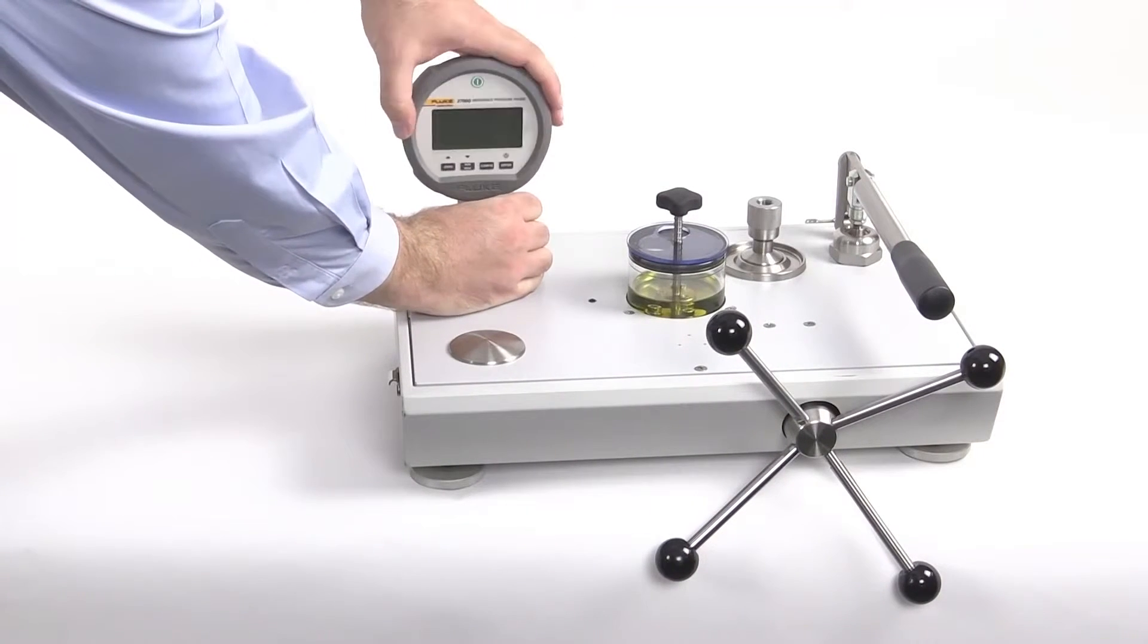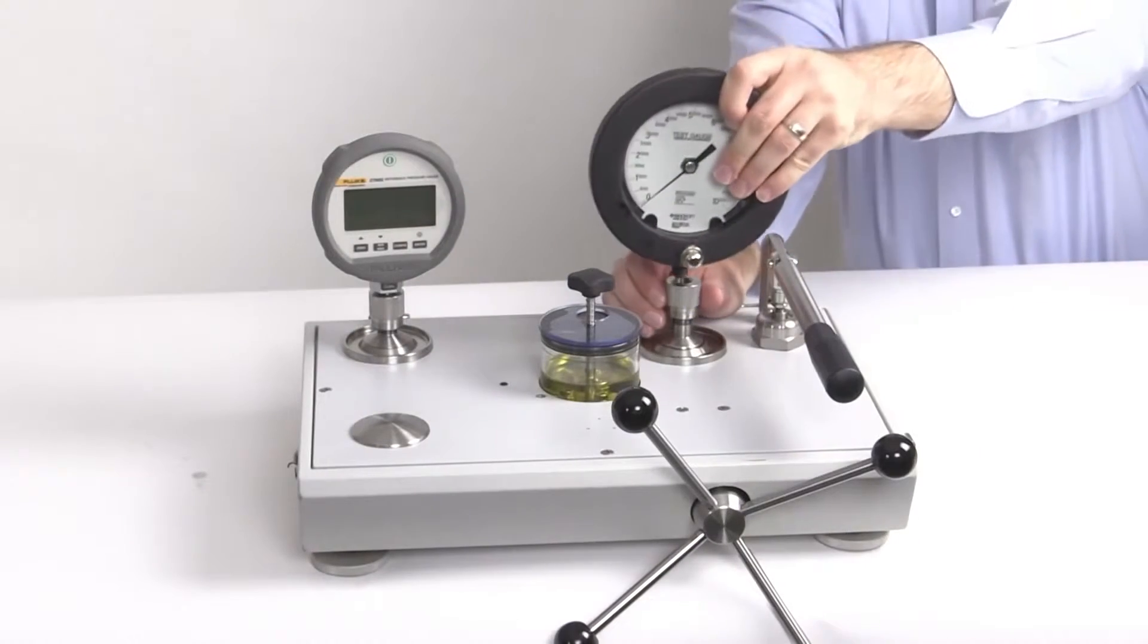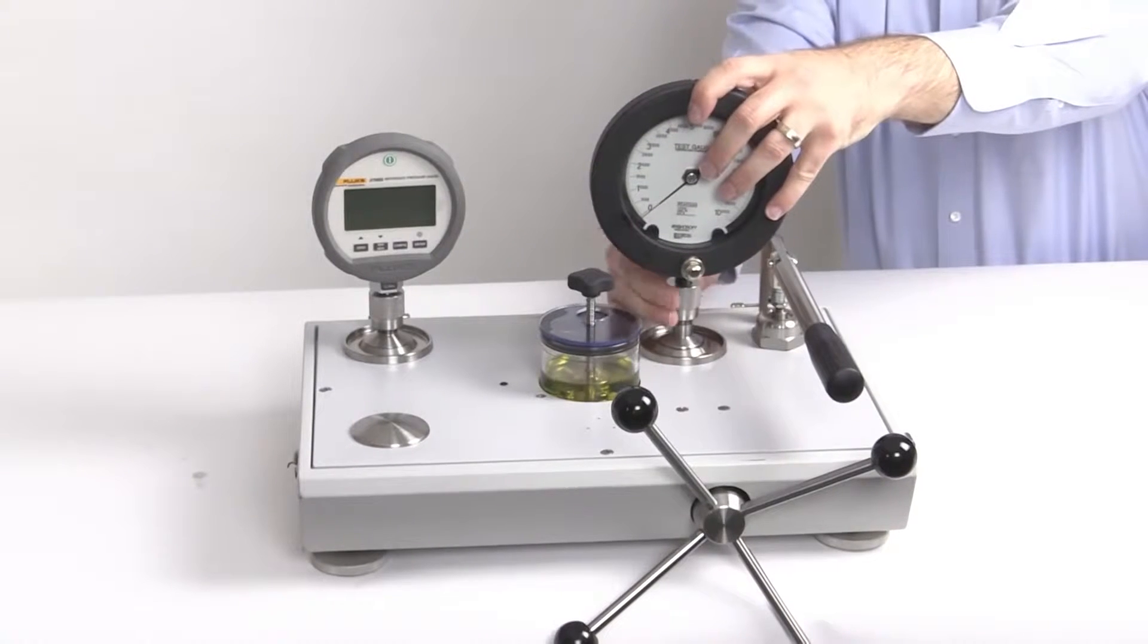The gauge and adapter can then be adjusted so that they are facing forward. The device under test is attached in a similar manner.